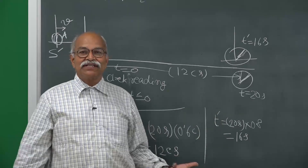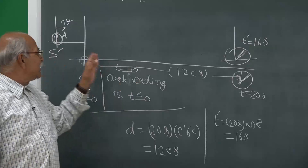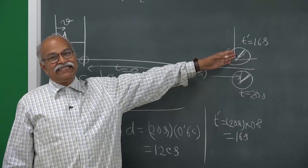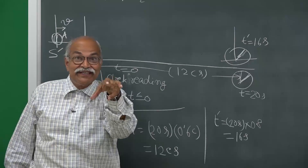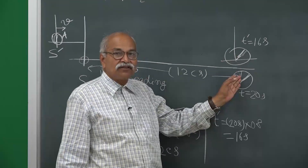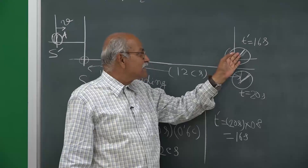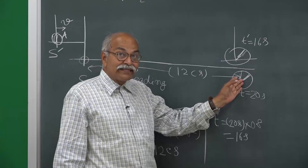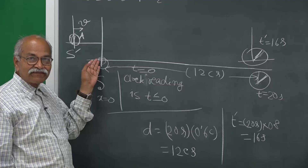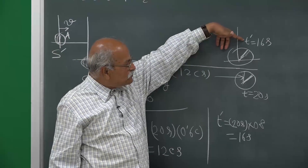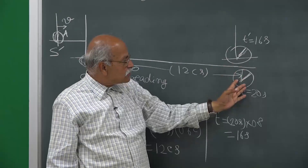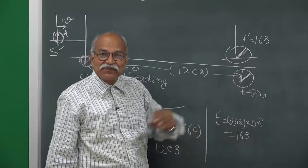The S observer declares that clock A was running slow: at the first event both read 0, but after 20 seconds of S time, the moving clock has advanced only 16 seconds. Now the question that haunts many students is: this S prime observer at that same instant can also look at his own clock and the S clock. He finds his clock reads t prime equal to 16 seconds but the S clock reads 20 seconds. How can S prime say the S clocks are running slow?